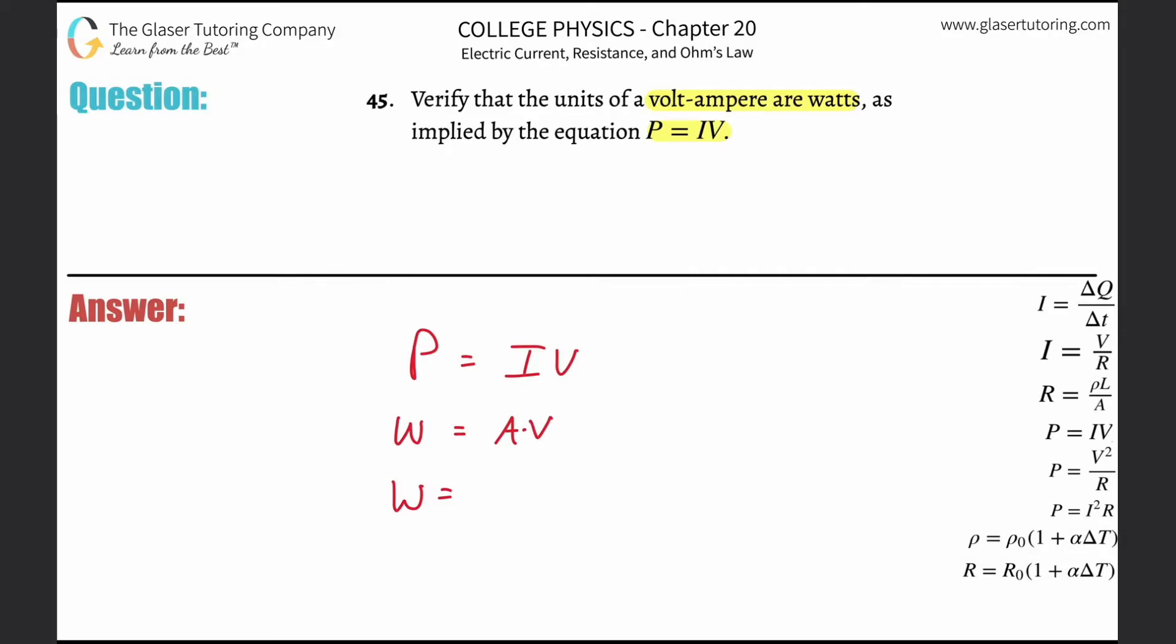Current is also known as the change in charge divided by the change in time, or just the charge over time. Charge is measured in coulombs, time in seconds. So instead of writing amps, we realize amp is the same as coulombs per second.